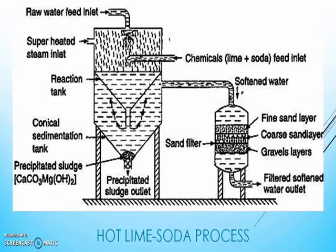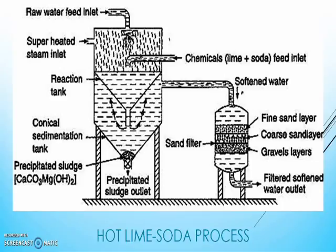Hot lime soda process. As you can see in the diagram, the hot lime soda plant consists of three parts: a reaction tank, a conical sedimentation tank, and a sand filter. The softening process takes place at a temperature of about 80 to 150 degrees centigrade. In the reaction tank, raw water and chemicals are heated by superheated steam to boiling temperature to mix thoroughly. At high temperature, the reaction takes place at a faster rate.